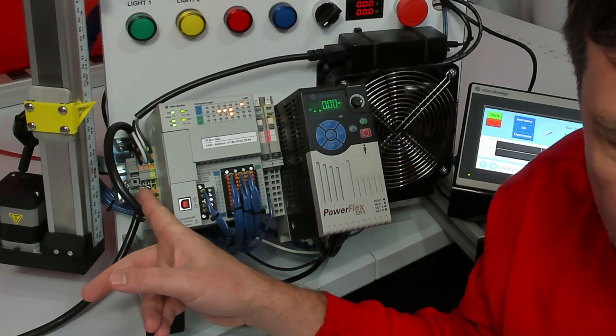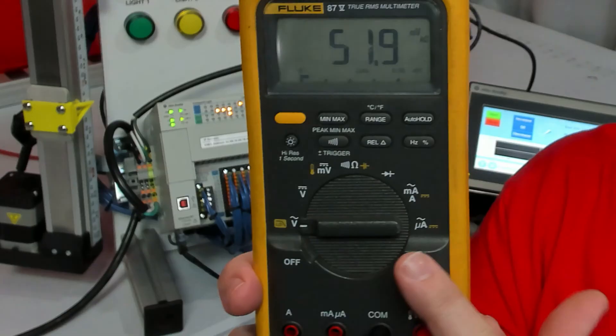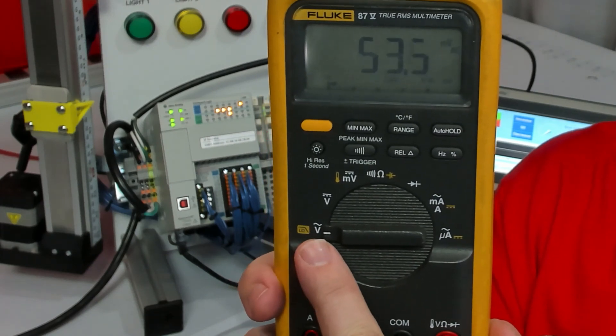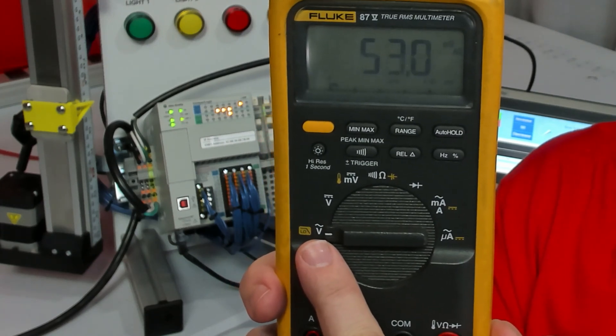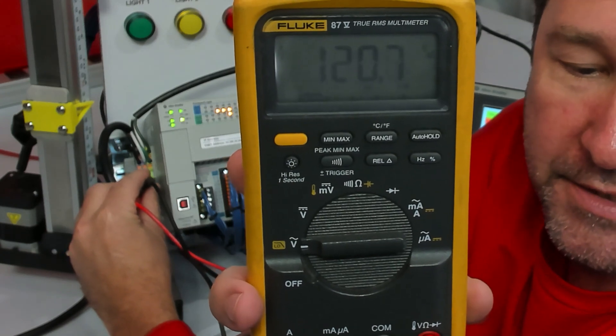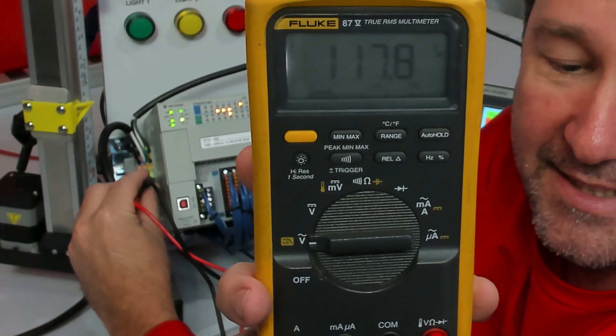To show the opposite, here we have 120 volts going in, and the two gray terminal blocks are L1 and neutral. In this case, I want my meter on volts with the wavy line—that's alternating current. When I touch it to my terminals, I have 120 volts AC.